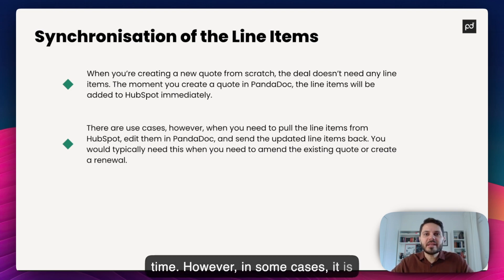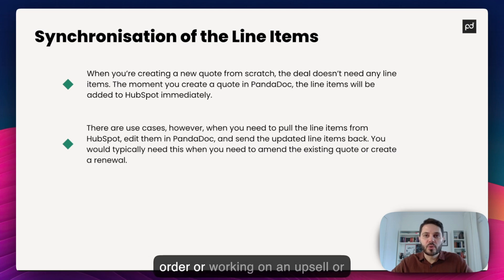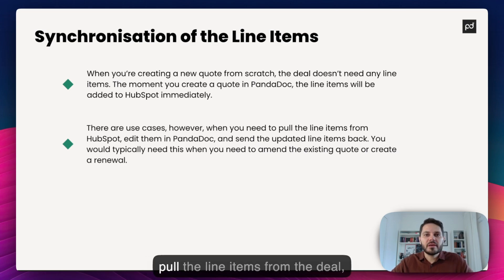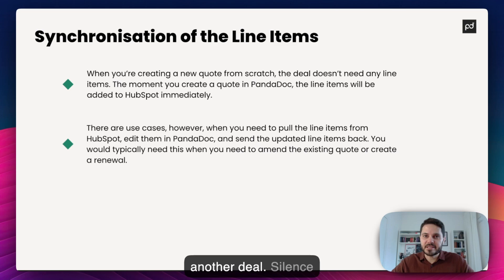However, in some cases it is really helpful to pull line items from a HubSpot deal into PandaDoc. For example, when you're managing an order or working on an upsell or renewal. In these cases, you would pull the line items from the deal, adjust them in PandaDoc, and then upload them back into the same or another deal.